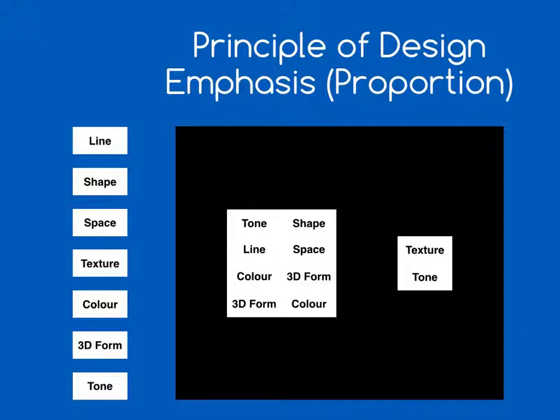The other way we can show emphasis is by proportion. Here we have two objects, one being larger than the other. This shows that one object is more important, or draws you to the design more than the other, because of the emphasis created by proportion.